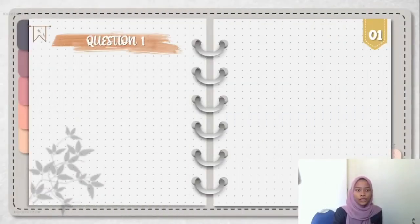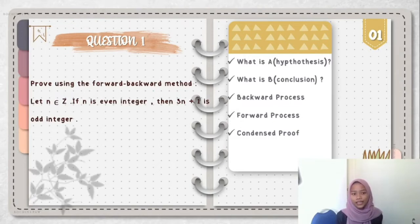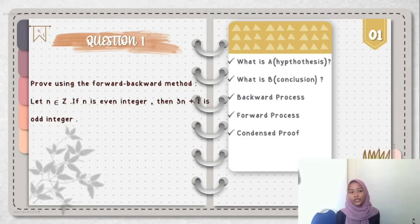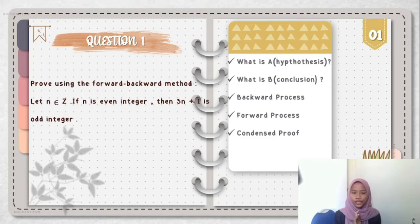For question 1: proof using the forward-backward method. Let N be an element of Z. If N is an even integer, then 3N plus 1 is an odd integer. In this video, I will explain what is A (hypothesis), what is B (conclusion), the backward process, the forward process, and the condensed proof.